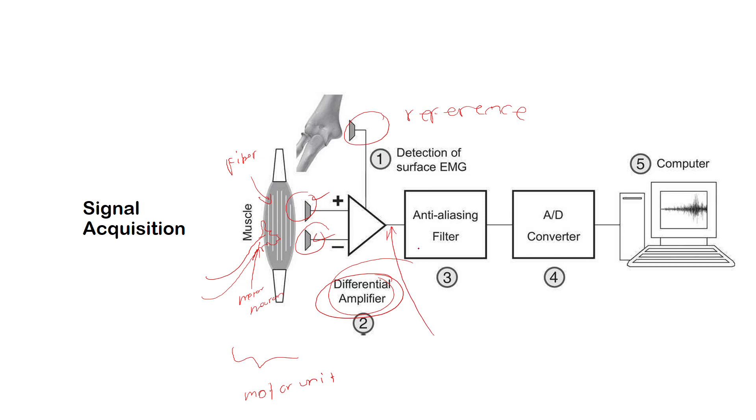Once you amplify the signal, then you have now the EMG recording activity. Then you can proceed by filtering the signal. You need to apply high-pass filters, low-pass filters, or maybe band-pass filters in order to detect only 50 to 100 Hz, because this is the most dominant frequencies that you can find in the EMG signals.